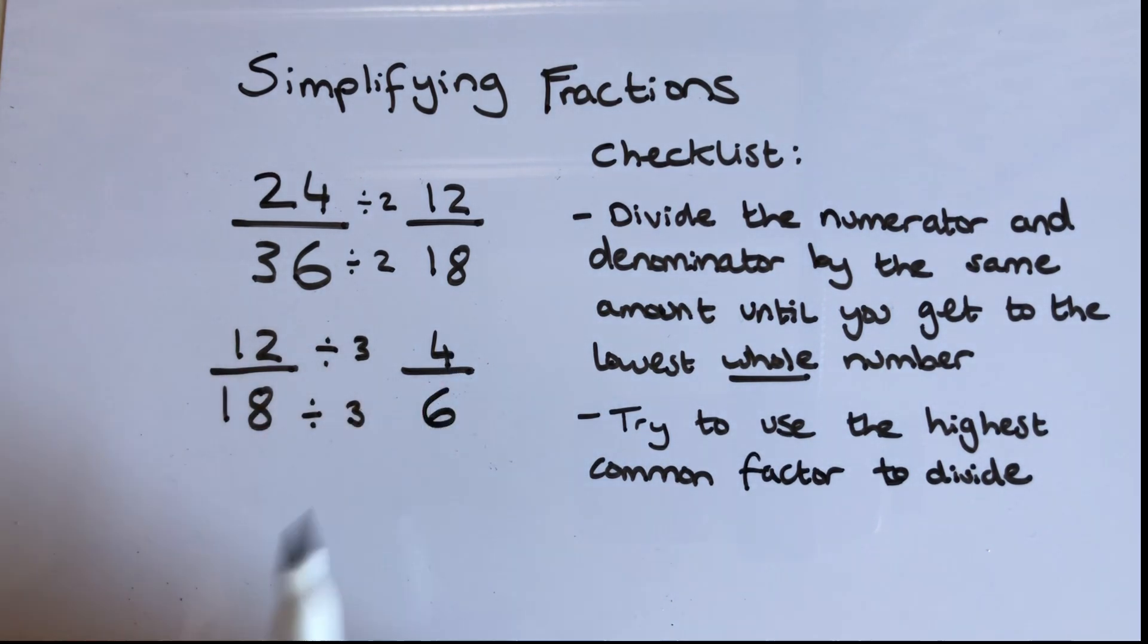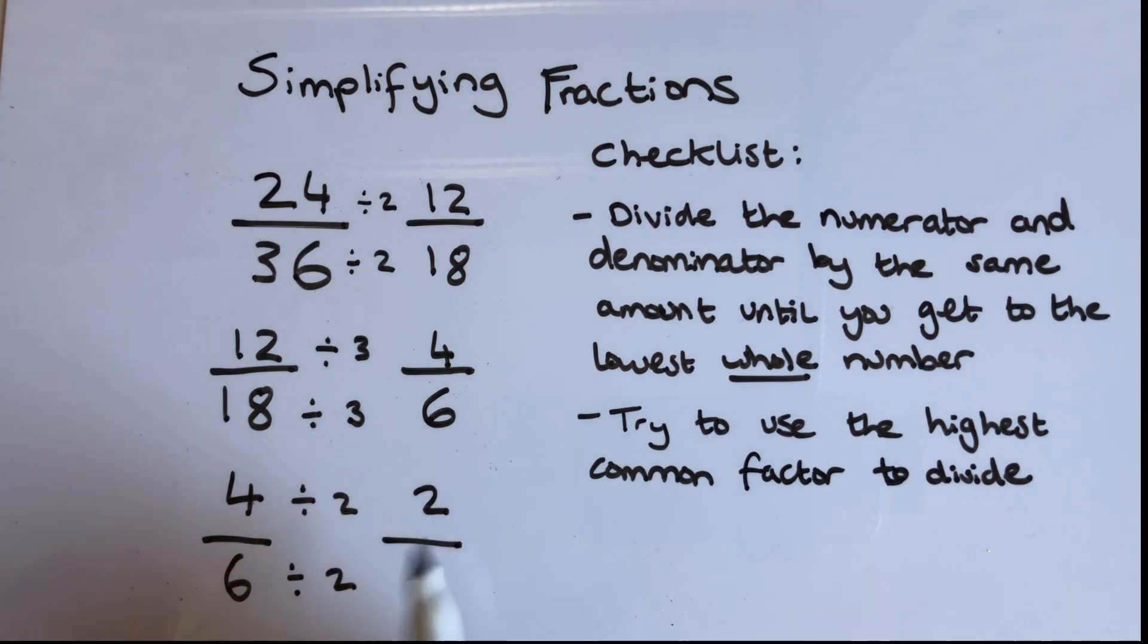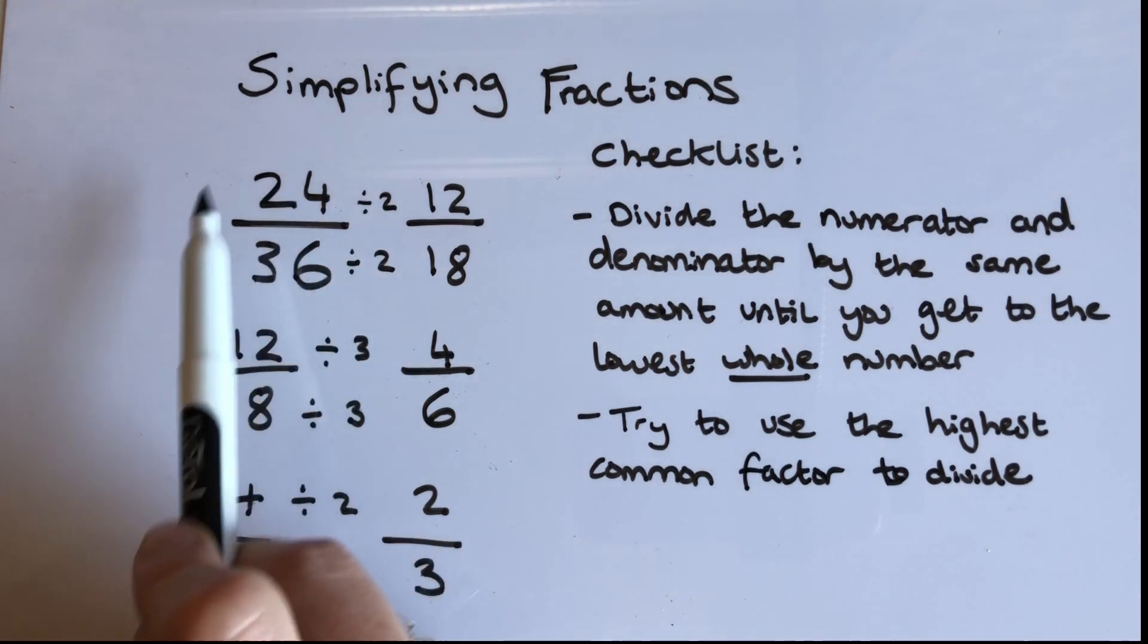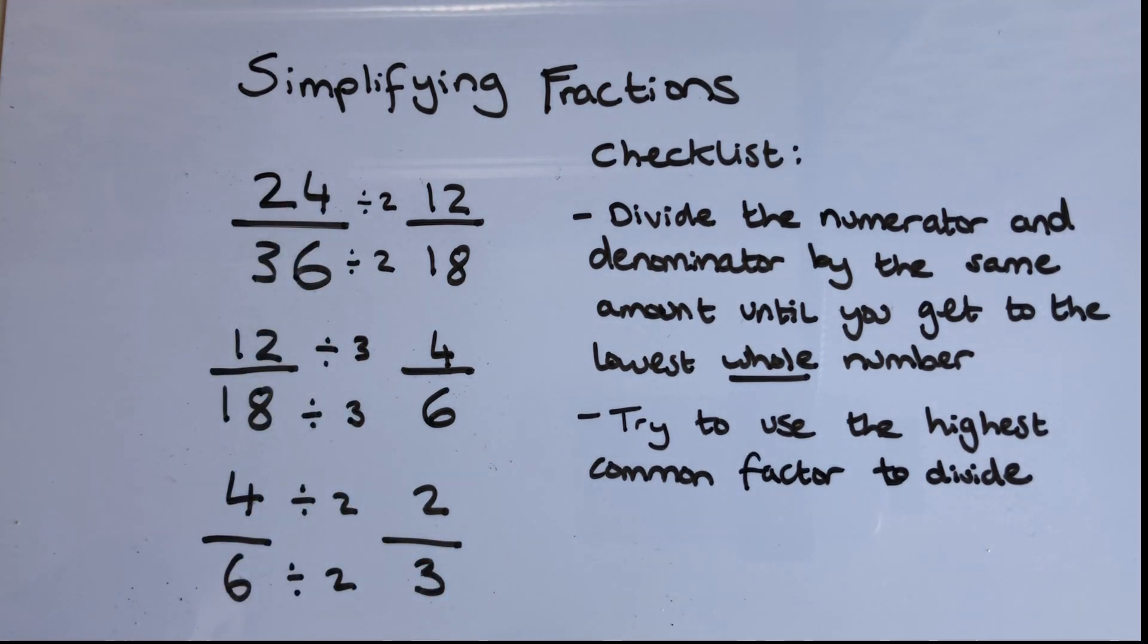I can see that I can divide this even further. I know that 4 divided by 2 equals 2 and 6 divided by 2 equals 3. So my fraction started off as a really big fraction, 24 over 36, and it ended up being 2 over 3.